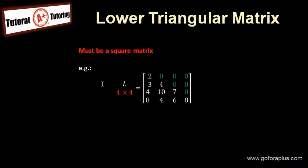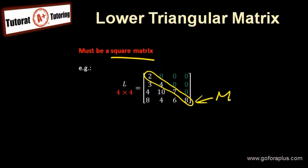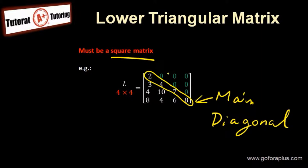So what is a lower triangular matrix? The first criteria is to be a square matrix. In this example, a 4 by 4 lower triangular matrix, we see the main diagonal — 2, 4, 7, 8. On top of this main diagonal, it must be all 0. We can see that all the green numbers are all 0. So we call this matrix a lower triangular matrix.